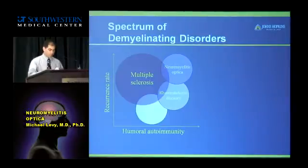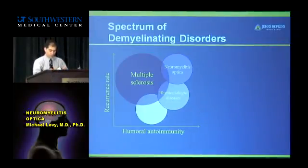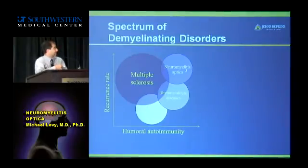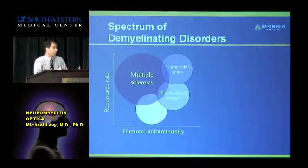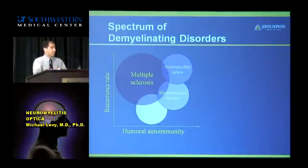Here is a chart that helps me think about neuromyelitis optica, which is in that top corner over here, where the y-axis is recurrence rate. You can see that NMO sits up there at the top. It happens a lot. If especially untreated, it can relapse four or five or even more times per year, which is very devastating. Some MS patients have the same high relapse rate. You can see transverse myelitis, which you heard about earlier, is largely monophasic.